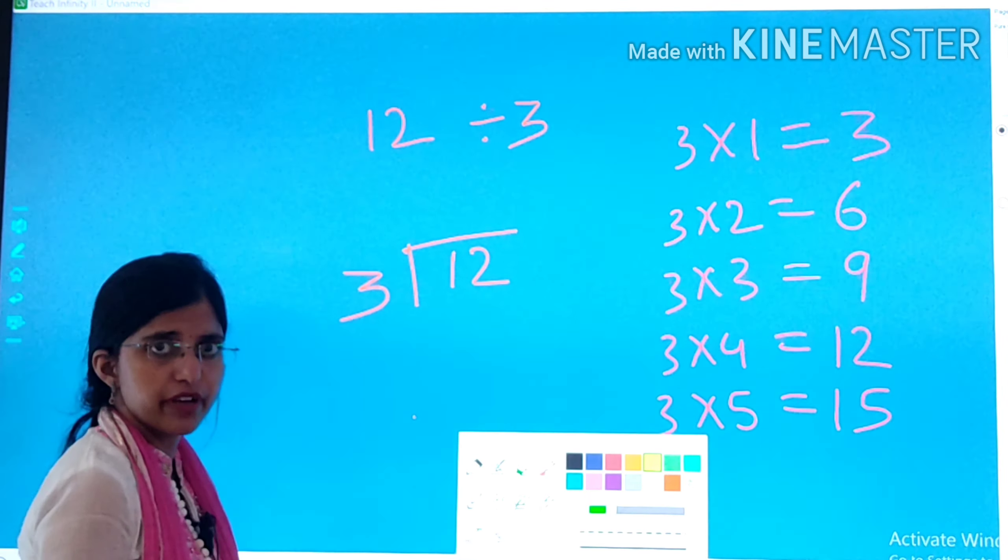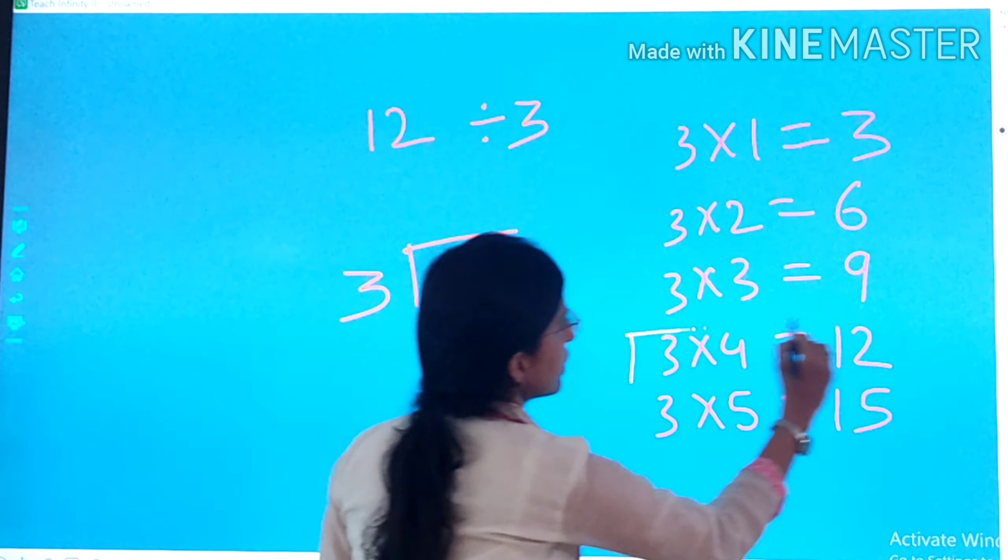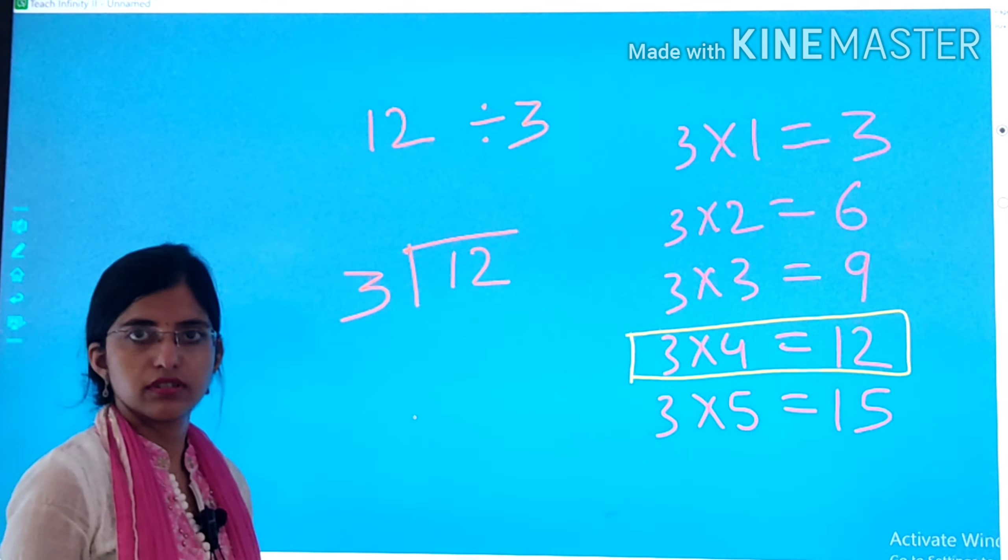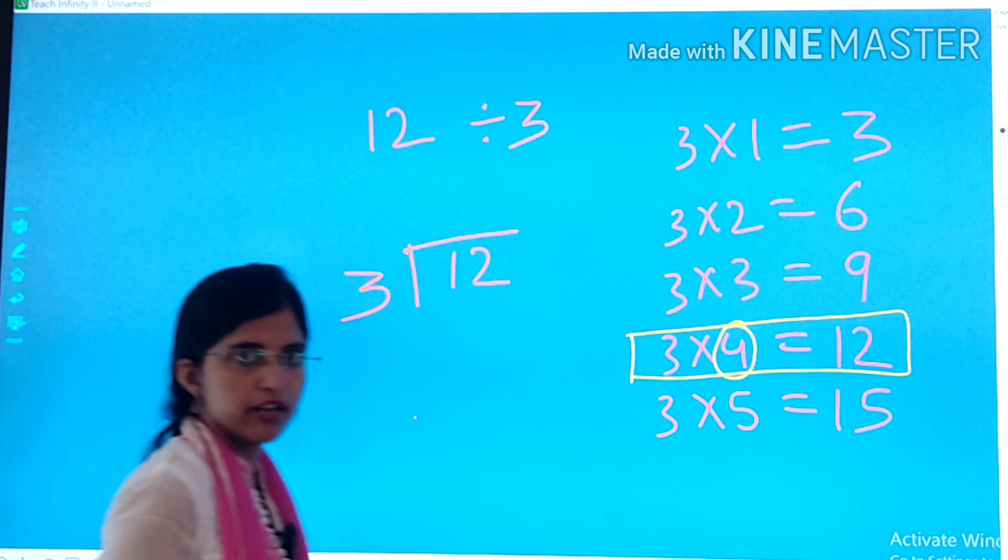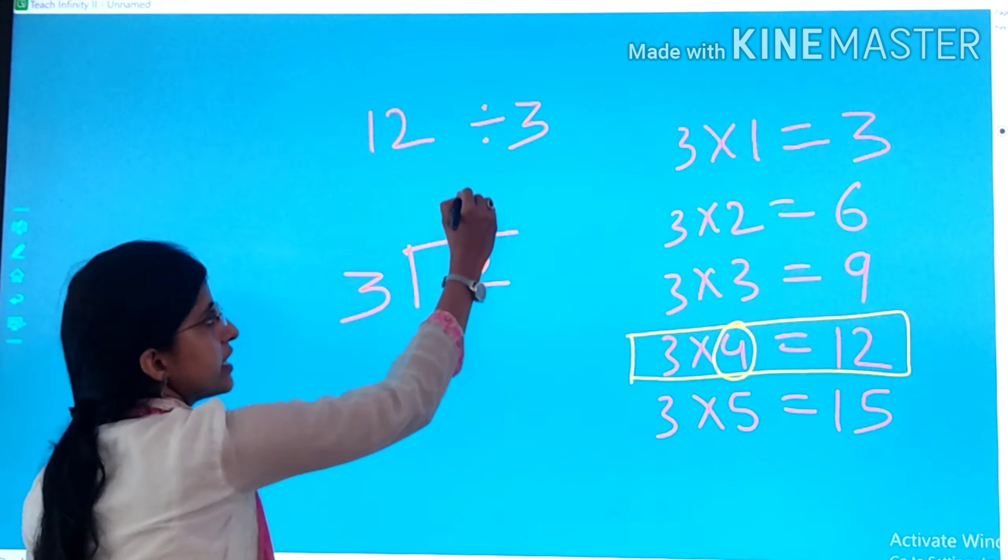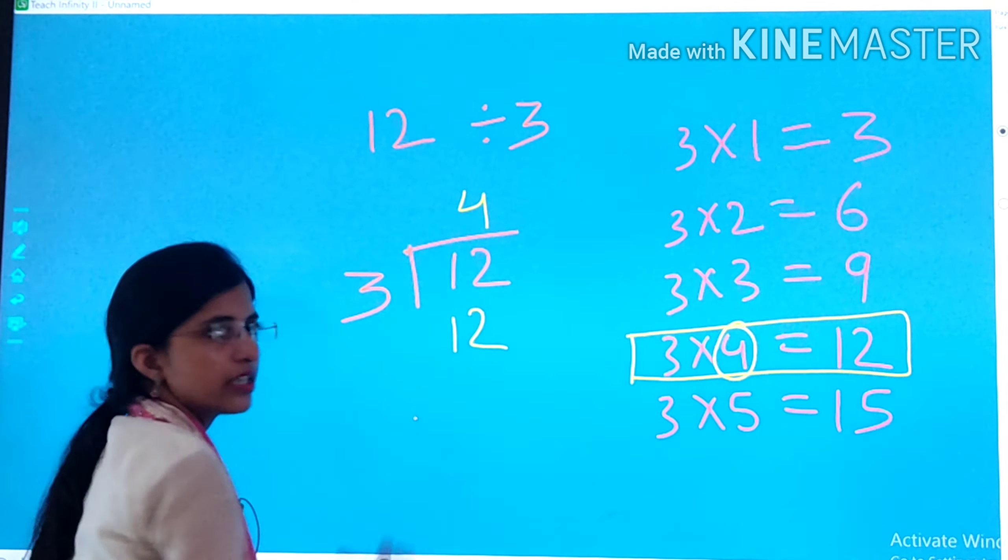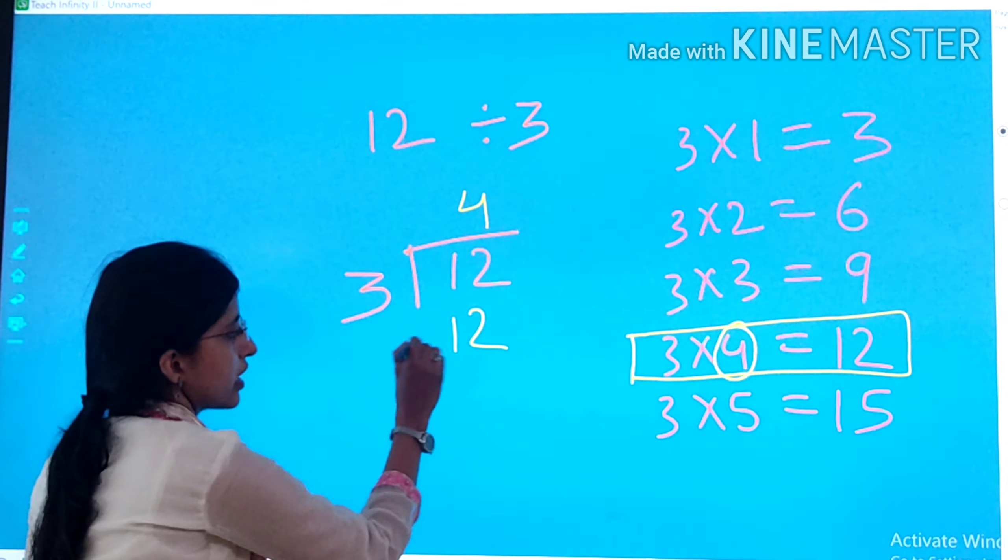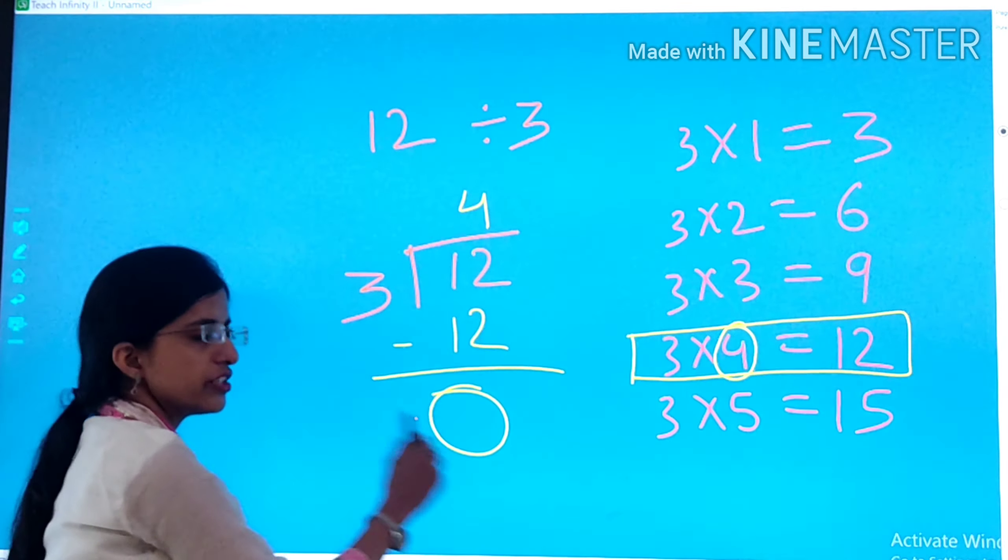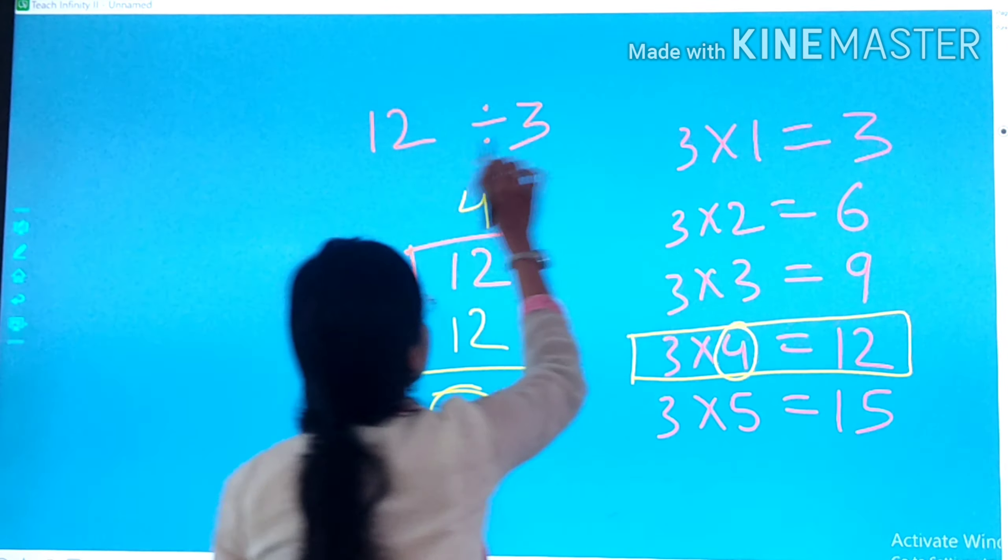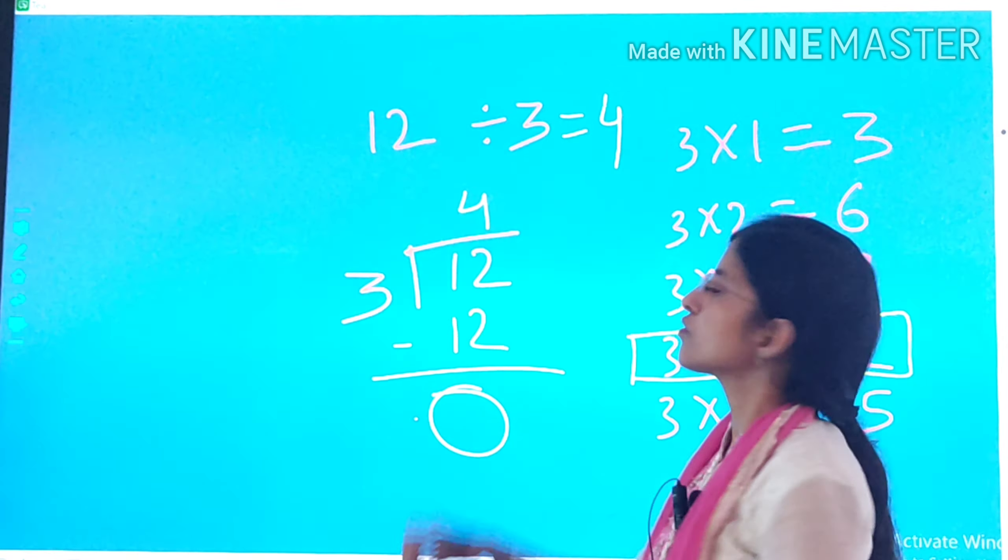Now see, here we have 12. So in the table of 3, when does 12 come? 3 fours are 12. So what I will write here? I will write here 4. 3 fours are 12, so I will write here 12. Then we do minus. Then we get 0, because 12 minus 12 is 0.